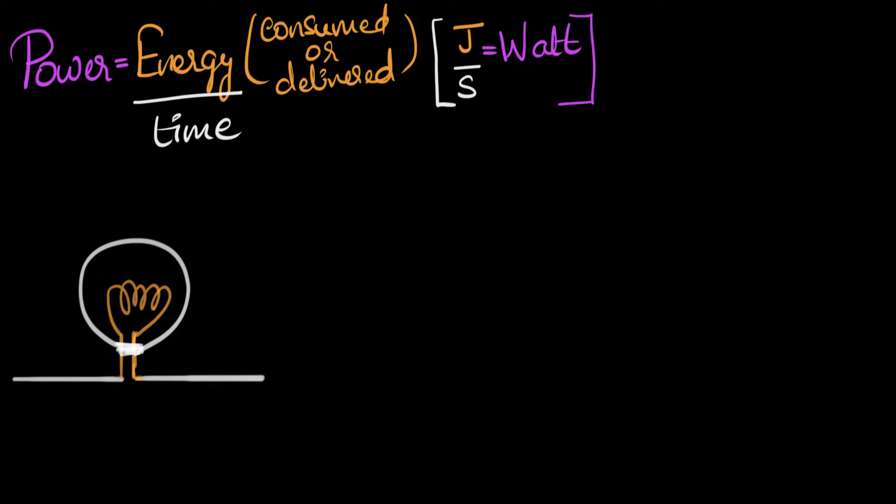So let's take an example. Imagine we have a bulb through which two amps of current is passing. And let's say the potential difference across the ends of the bulb is, let's say five volts. Now looking at these two numbers, let's see if we can figure out what's the power consumed by this bulb.